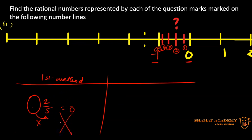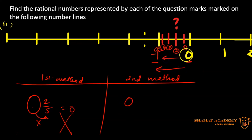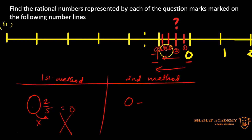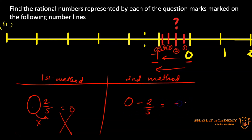So I use the second method. The main number is 0, and since the number line is going towards the left — the negative side — I subtract. It's the 2nd division out of 5 total divisions, so I do 0 minus 2/5, which gives me negative 2/5. That's our answer.